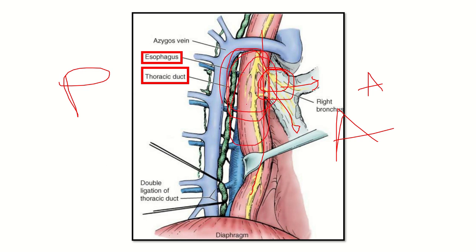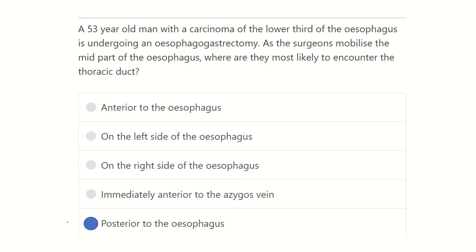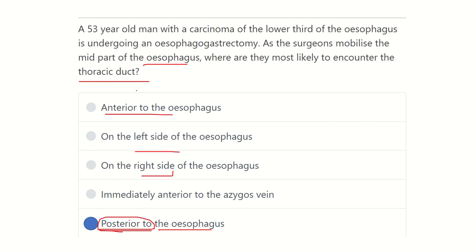Just posterior to the esophagus in the mid part, we can see a vessel-like structure which is the thoracic duct. The thoracic duct is located immediately posterior to the esophagus — not anterior, not left, not right. Therefore, during an esophagectomy to mobilize the mid part of the esophagus, there is a risk of injury to the thoracic duct, which lies just posterior to the esophagus in the middle part.